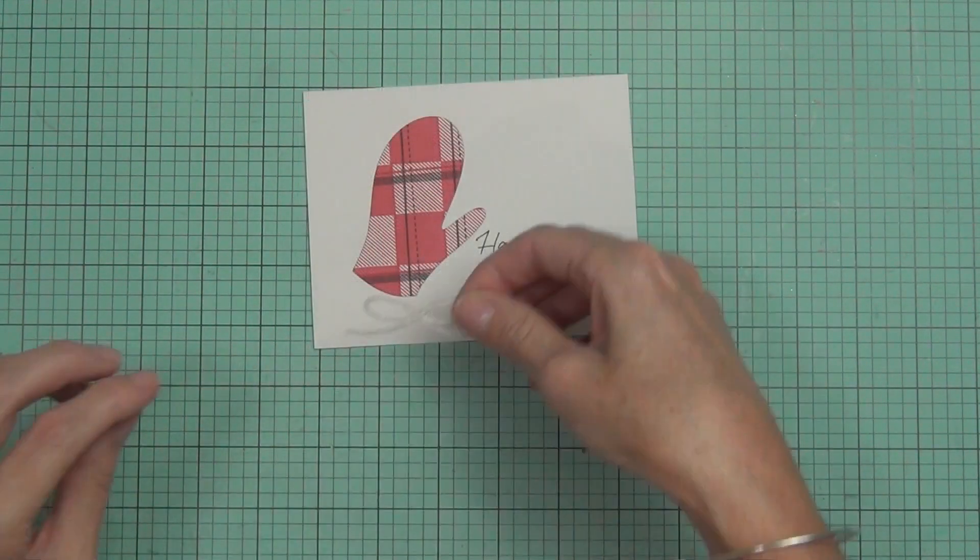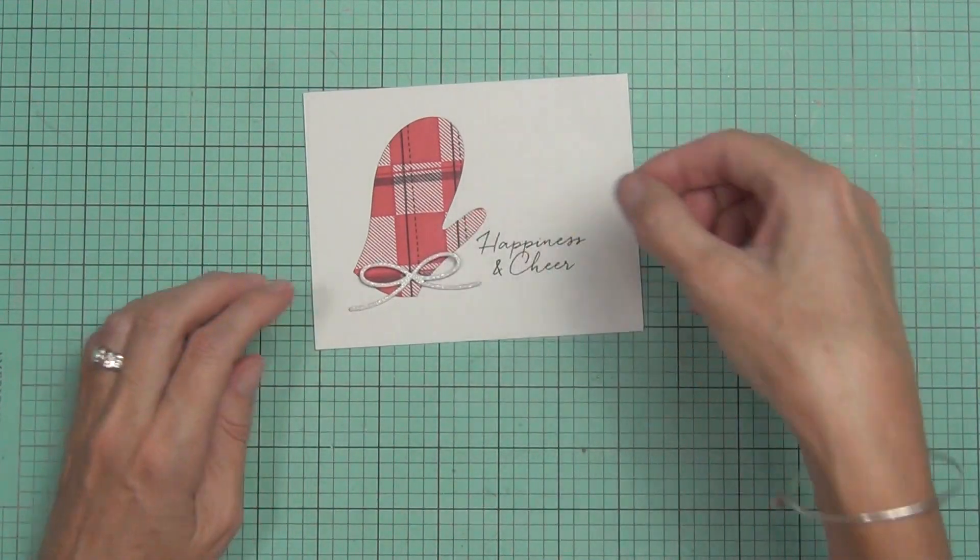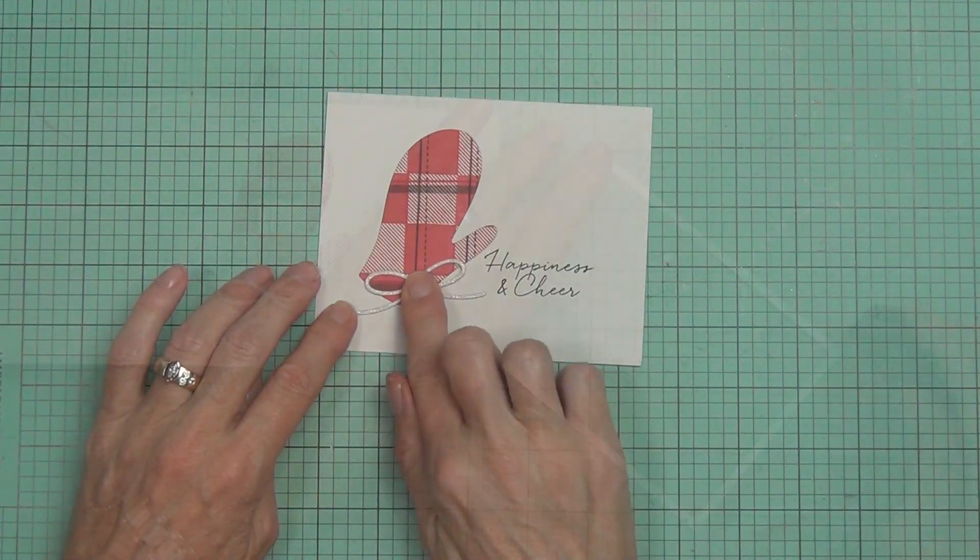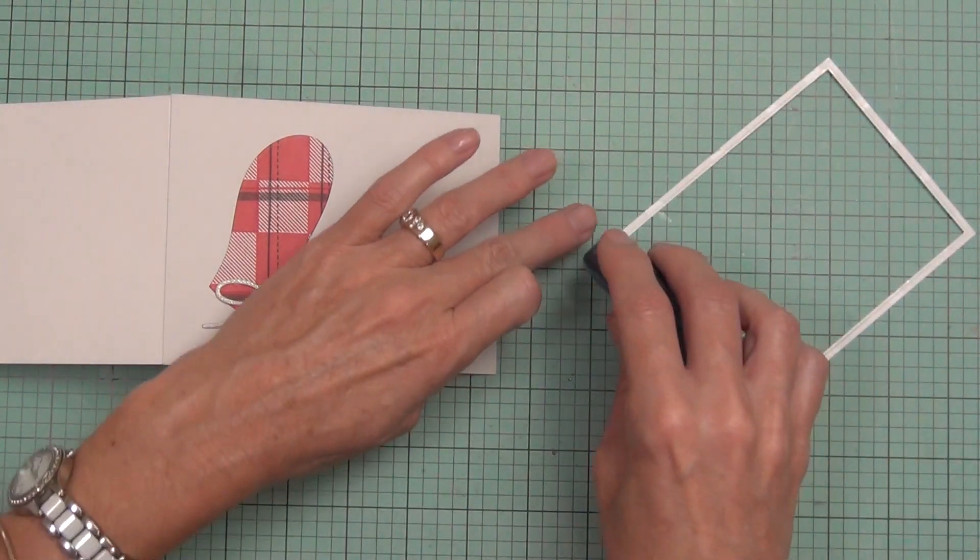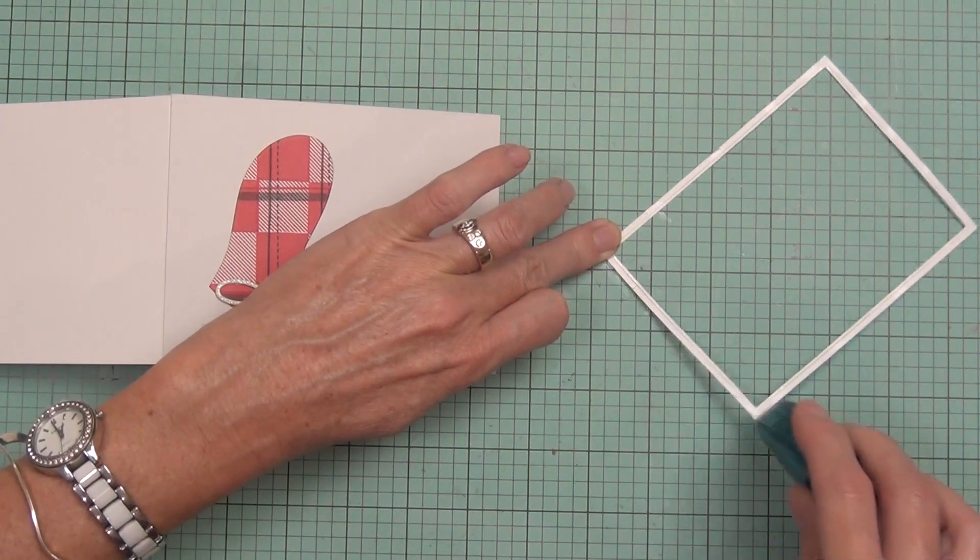And then I'm just going to attach—and now this is the other mitten that I made, the one that's got a heavier pattern to it. I'm just going to attach that with an ATG and then a glue dot to adhere a little glitter bow that I cut from the Parcel Box set.